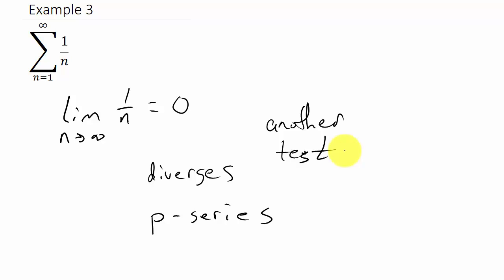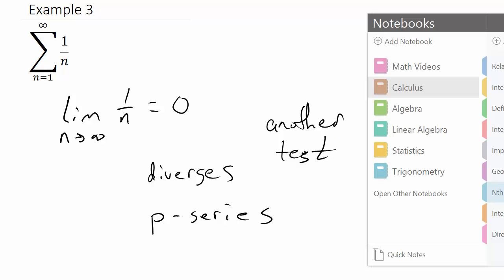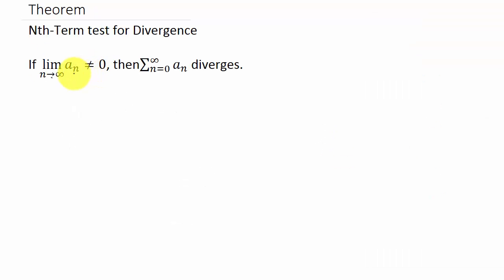Just remember that the nth term test for divergence only checks to see if the series diverges. If the limit does not equal 0, then it diverges. If it equals 0, you can't draw any conclusions — you would have to use another test. Alright, so I hope this has helped. If you like the videos, you can watch some more of them, or you can subscribe. Thanks.